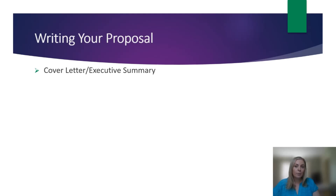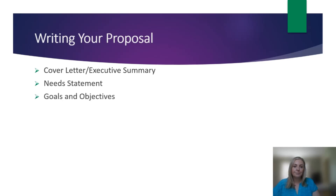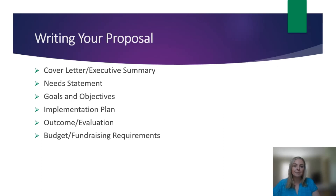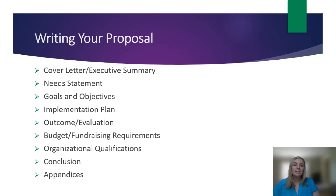I would recommend using Grammarly, which is a free tool that provides recommendations for online grammar and spell checking, as well as writing clarity. Some other areas of your proposal include creating your needs statement, your goals and objectives, your implementation plan, the outcome and evaluation, your budget and fundraising requirements, your organizational qualifications, the conclusion, as well as any additional requirements by the funder. This can include your tax-exempt status, your organizational or financial documentation, list of your board of directors, leadership, or staff.